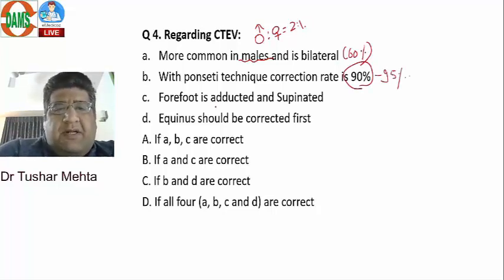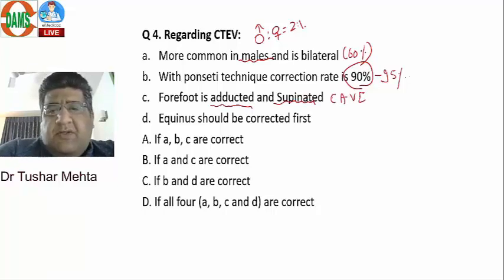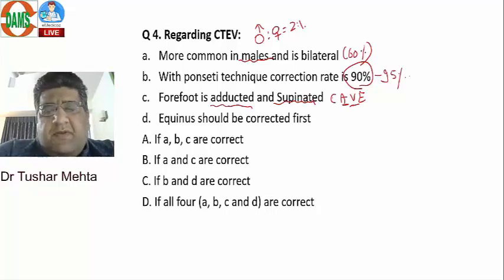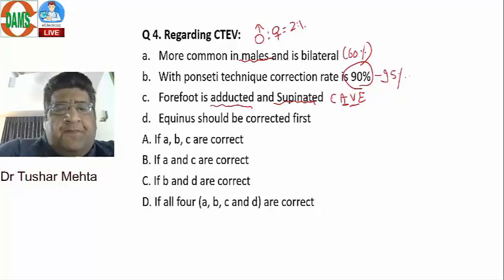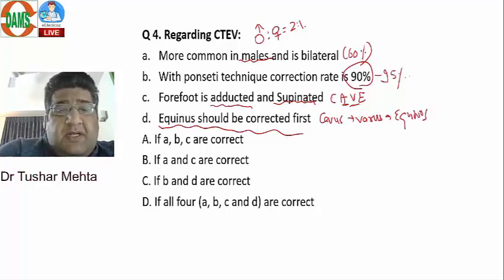In clubfoot, the foot is adducted and supinated — true. The deformity sequence is CAVE: cavus, adduction, varus, equinus. The sequence of correction is cavus first, then varus, then equinus. So the statement that equinus should be corrected first is wrong. Options A, B, and C are correct.